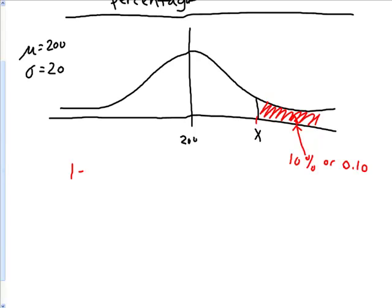It's one minus zero point one zero, which equals zero point nine zero. So this point right here is at point nine.